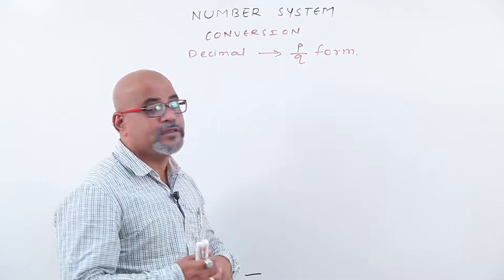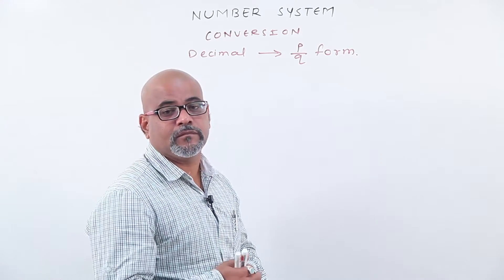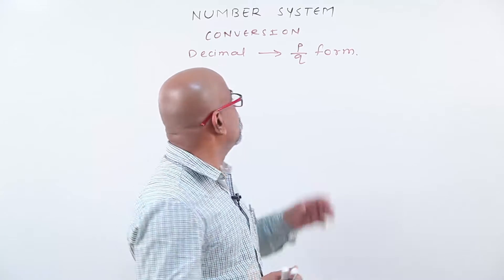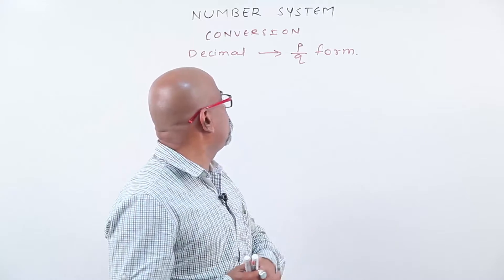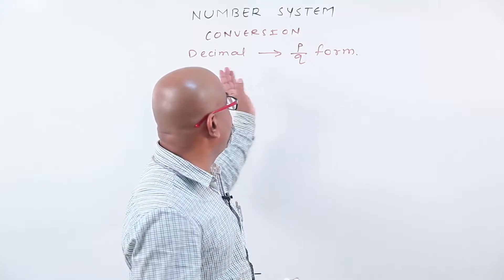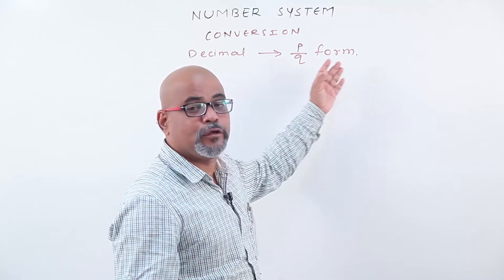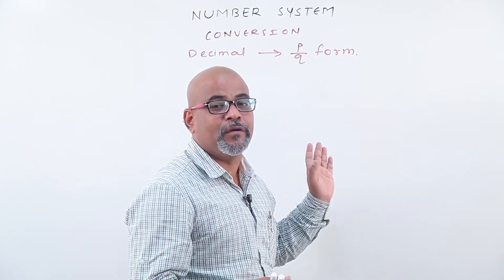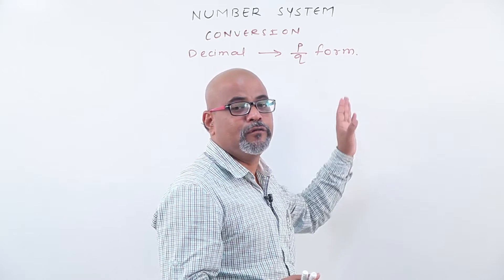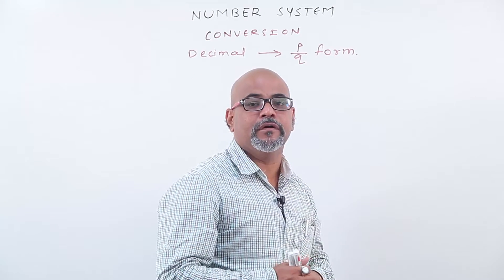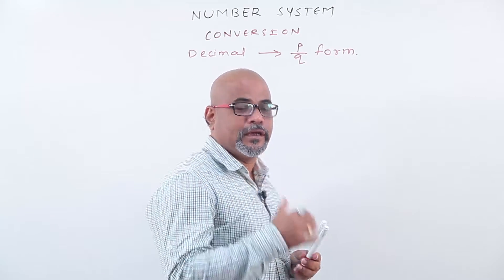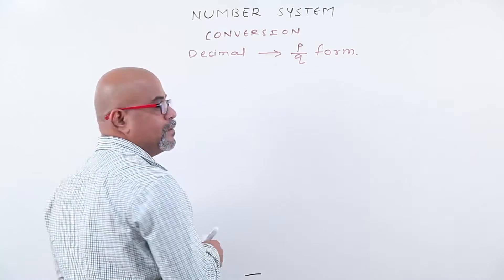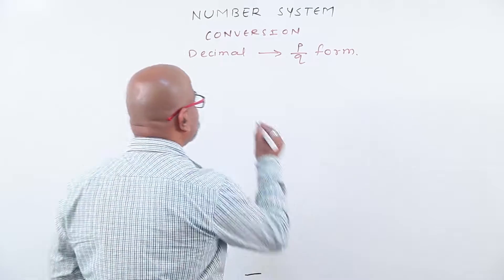Today, in number system we will check conversion of decimal into p by q form. That means given decimal you have to convert into p by q form. Let us check some examples of how to convert decimal into p by q form.